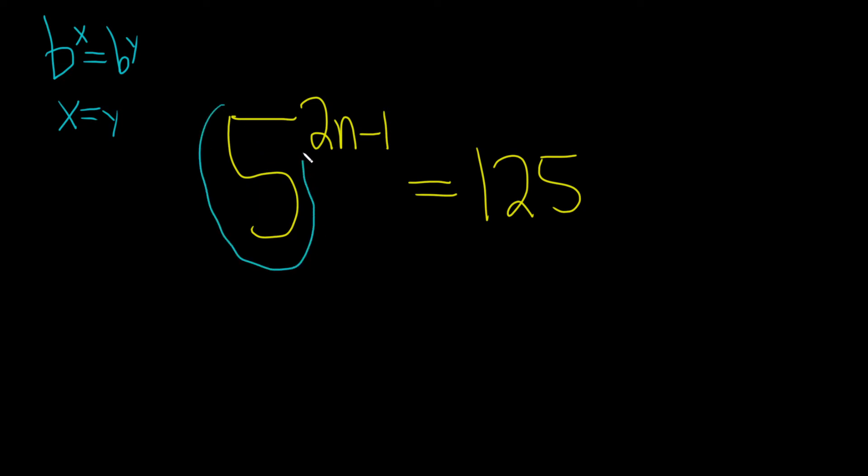So here we already have 5 on one side, that's going to be our b. So let's keep this side the same, so 5 to the 2n minus 1.